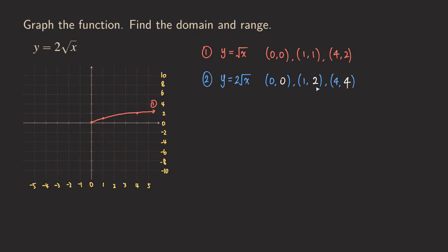Those are the three new key points for this function. If we plot them, we get (0, 0), then (1, 2) — you can see the y-value is being doubled while the x-value stays the same. The third key point is (4, 4), so we look at x = 4 and go up to y = 4. That point was at y = 2 before, and now it's at y = 4. We connect those key points and we have the curve — that is the graph we are trying to draw.